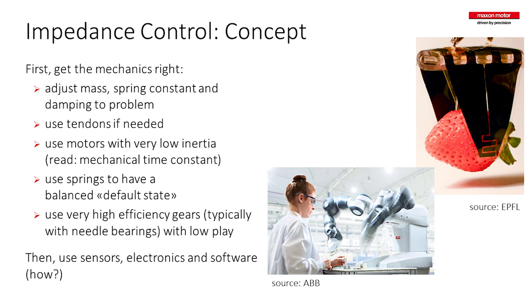Next, use motors with very low inertia. Low mechanical time constant relates high force to low inertia, and low inertia with high force means the apparent mass of the robot is low. For an exoskeleton, the agility of the actuator must match the agility of our muscles, requiring mechanical time constants in the region of two to three milliseconds or below. The gear, motor inertia, hysteresis, and friction are all part of a multi-dimensional optimization problem you can solve according to your needs.